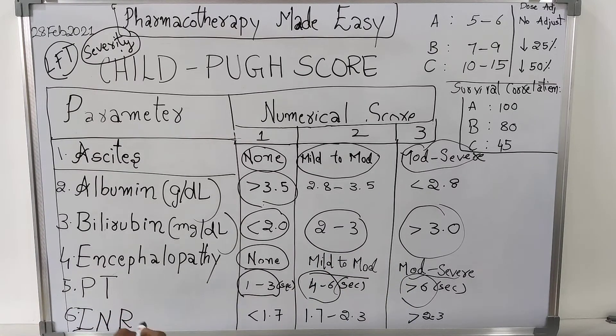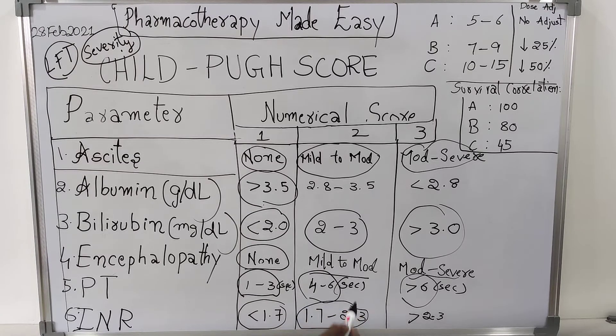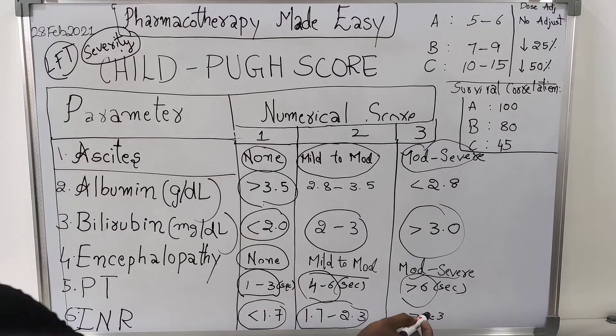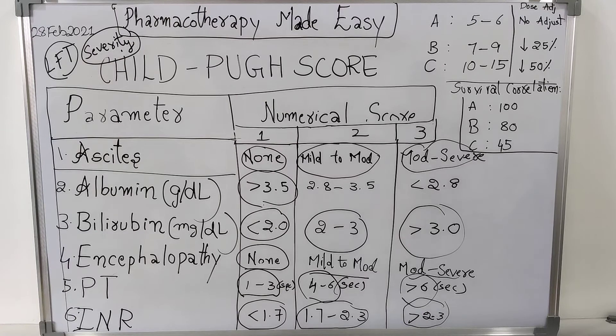And INR, since INR is a ratio, it does not have any units as we know. If it is less than 1.7, score will be 1. If it is 1.7 to 2.3, score will be 2. If it is greater than 2.3, score will be 3.